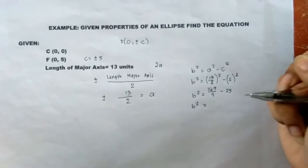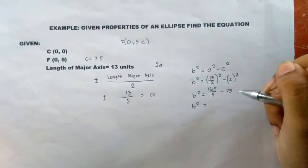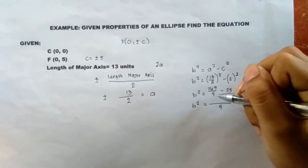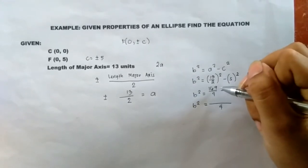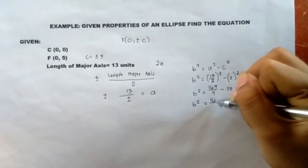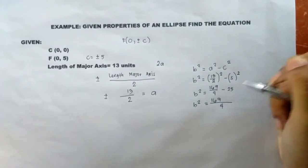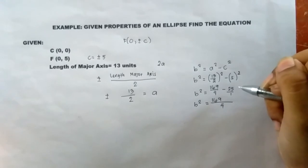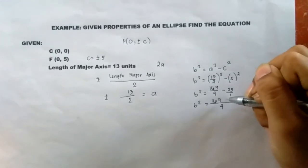Now, what we need to do is get the LCD, and here the LCD is 4. 4 divided by 4 is 1, multiply it to 169, we have 169. 4 divided by 1 is 4, multiply it with 25, you will get 100.